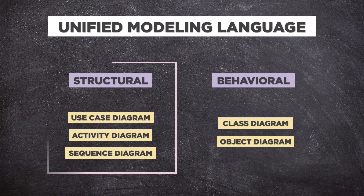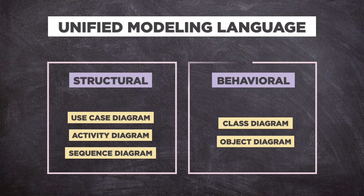These are structure diagrams, and these are behavioral diagrams. Structure diagrams show the things in the modeled system — in more technical terms, they show different objects in a system. Behavioral diagrams show what should happen in a system; they describe how the objects interact with each other to create a functioning system.